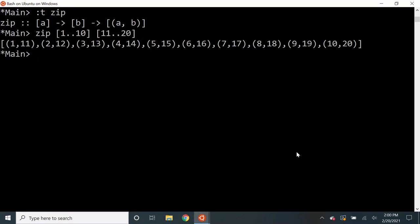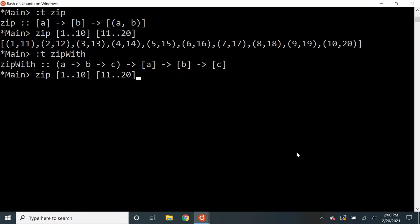But you also have a zip width operation which takes a binary operation as an input and uses it as a zipper operation. For example here we can take plus as the zipper operation and it produces the sum of corresponding tuples instead of the tuples themselves.